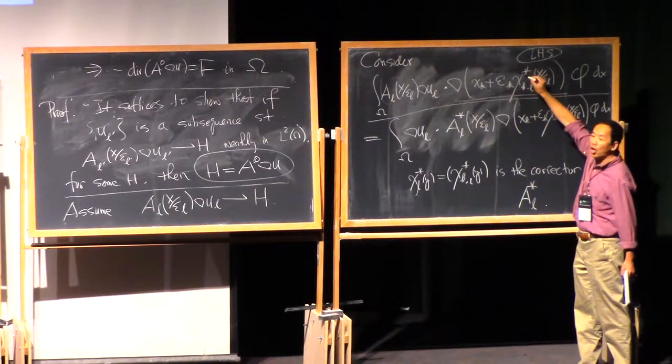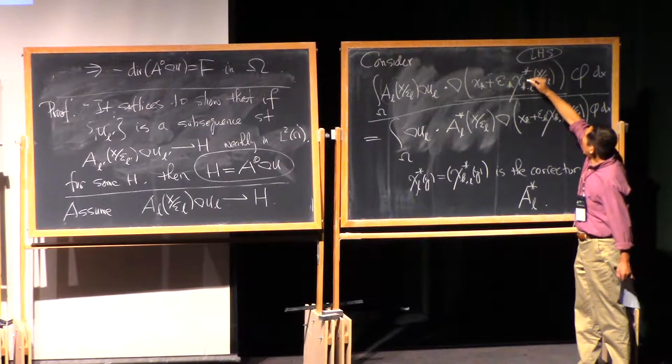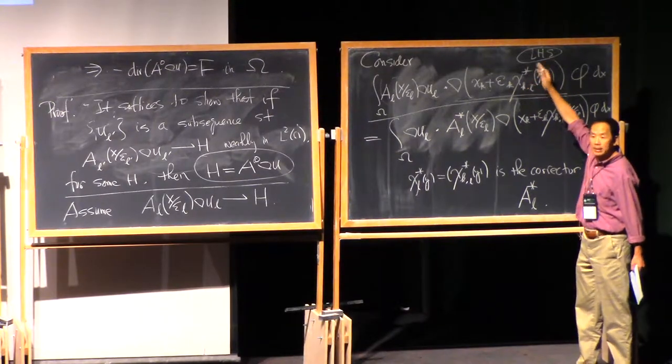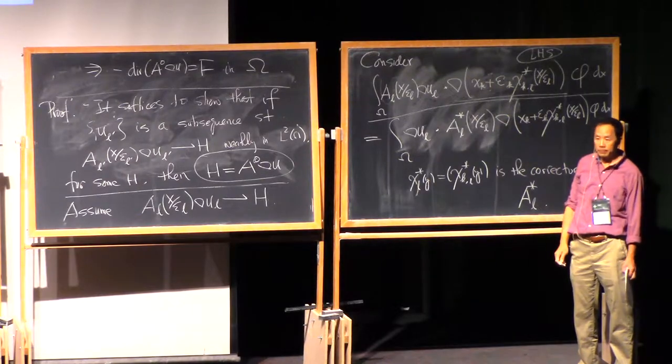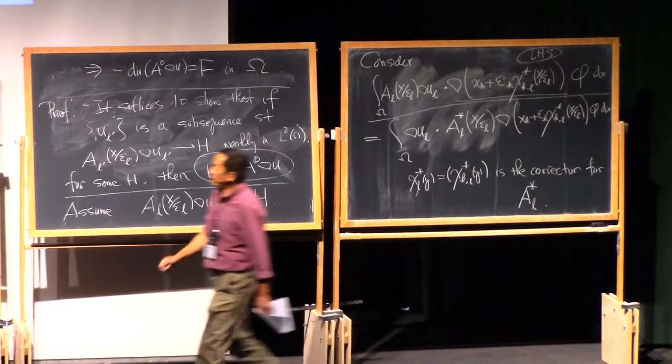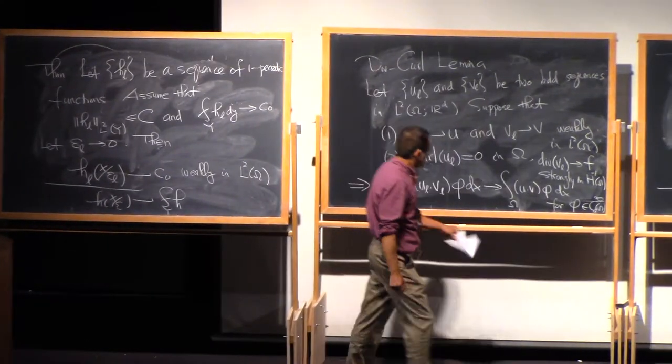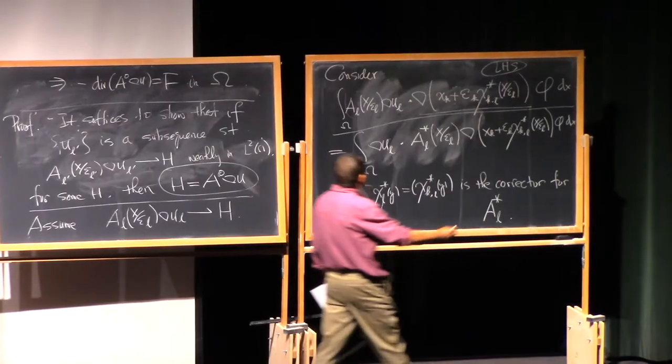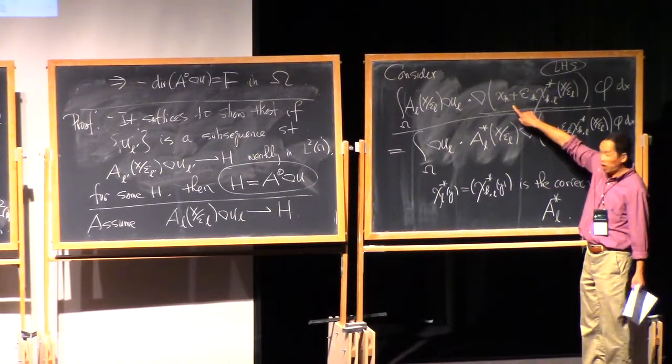Then you have xk star of x over Ypsom L. xk star is periodic. Scaled, you have a limit by that theorem. So both sides have a limit, weak limit, and then you have to verify whether you have divergence curve here. So I guess here, because this is in the gradient form, the curve is zero.